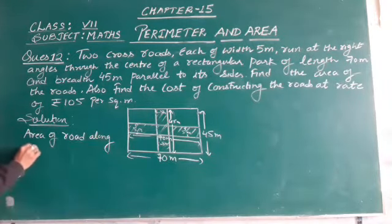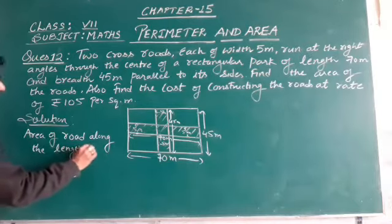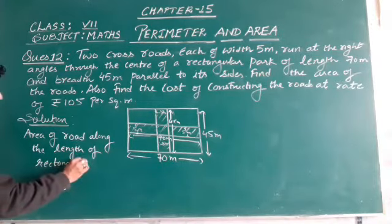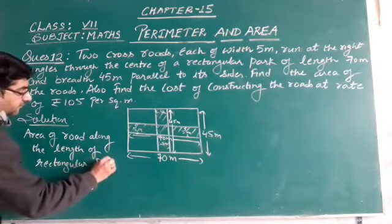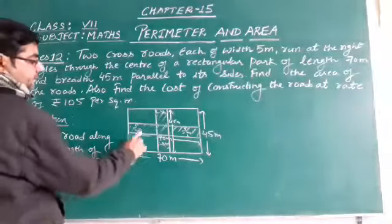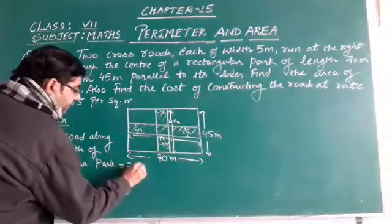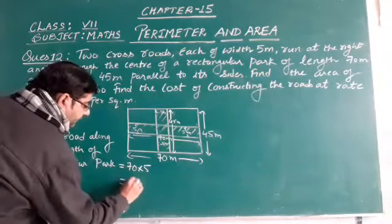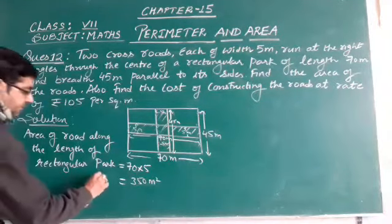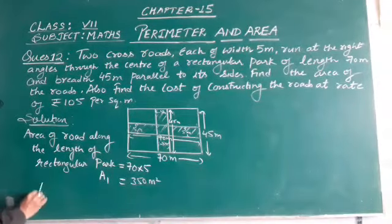The path along the length of the rectangular park is equal to 70 into 5, length into breadth, which is 70 into 5 equals 350 square meters. We can take this as A1.